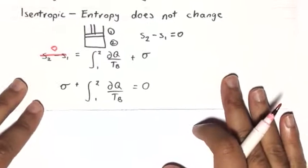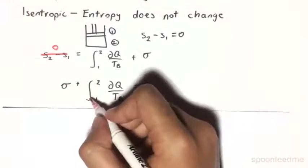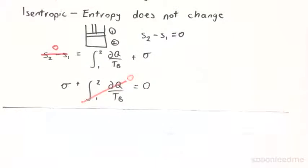Now an isentropic process is also a process where no heat is added to the system. Therefore, this will also be 0.